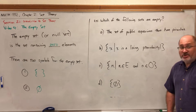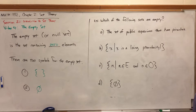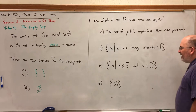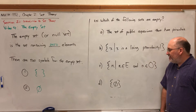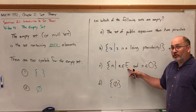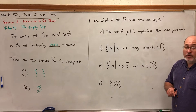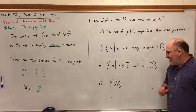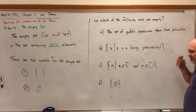On the board I have four examples: which of the following sets are empty? A: the set of public aquariums that have piranhas. B: the set of all X's such that X is a living pterodactyl. C: the set of N's such that N is an element of the even natural numbers and N is an element of the odd natural numbers. And D: the set containing the empty set — that's an interesting one. Let's take them one at a time.